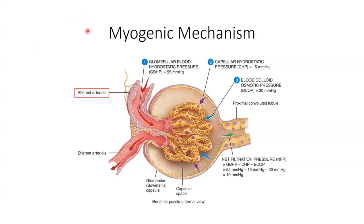The myogenic mechanism occurs when stretching triggers contraction of smooth muscle cells in the walls of the afferent arterioles. As systemic blood pressure rises, GFR increases because blood flow to the glomerulus increases, raising glomerular blood hydrostatic pressure. The elevated blood pressure stretches the walls of the afferent arteriole, and in response the smooth muscle fibers constrict, narrowing the lumen, reducing blood flow into the glomerulus and reducing glomerular blood hydrostatic pressure, resulting in reduced net filtration pressure and reduced GFR.